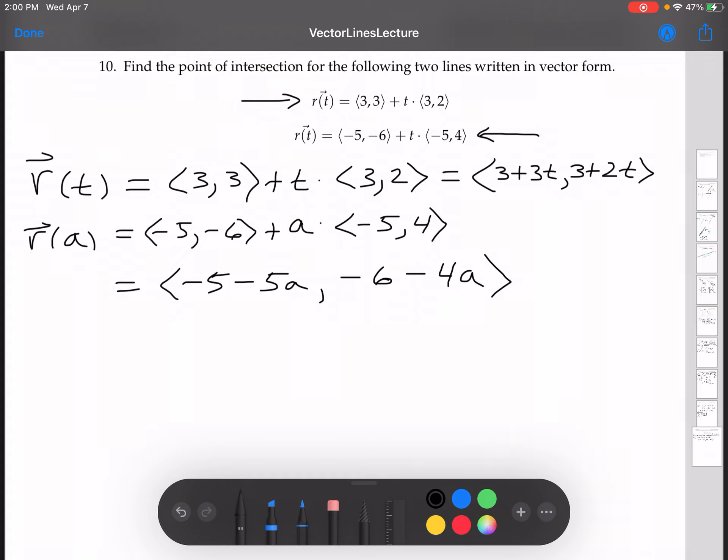All right, now think about what happens when they cross, right? When these two lines cross, that means that they're at the point of intersection, right? If they cross at some point, that means that their x coordinates are the same when they cross, and their x and their y coordinates are the same.